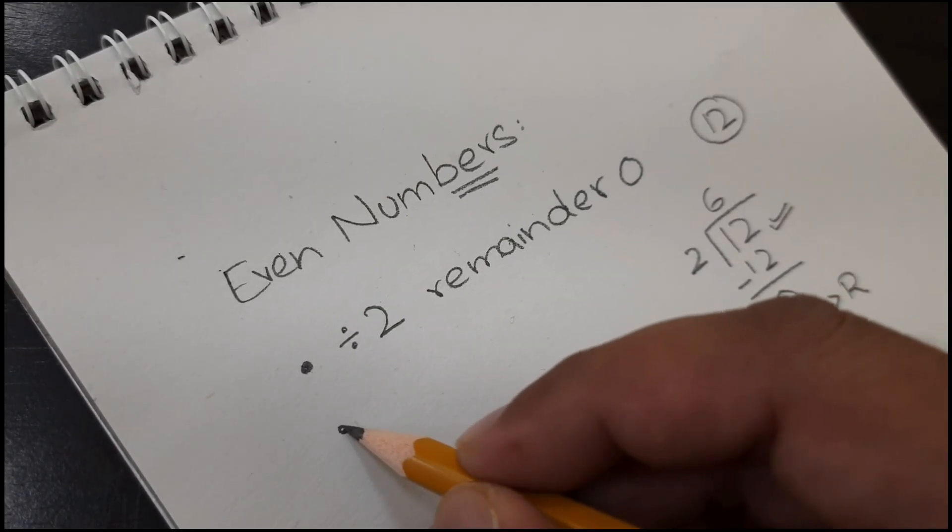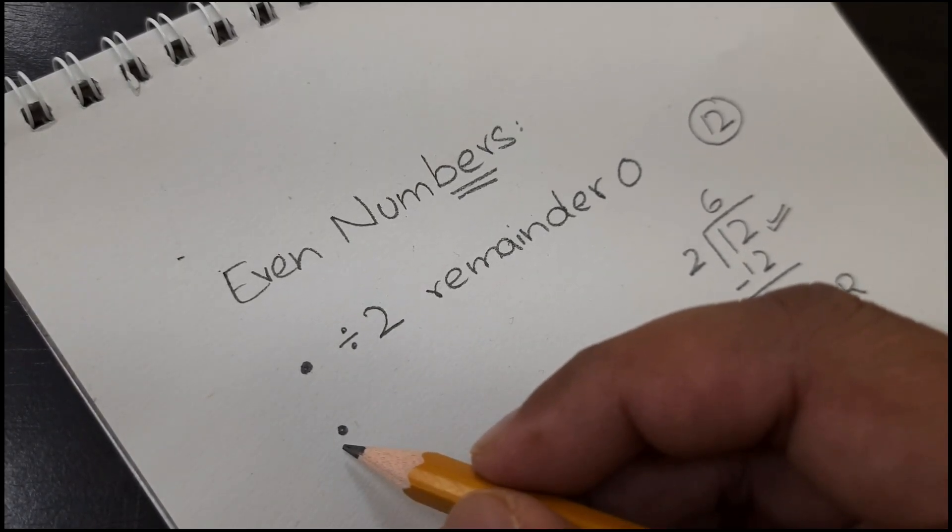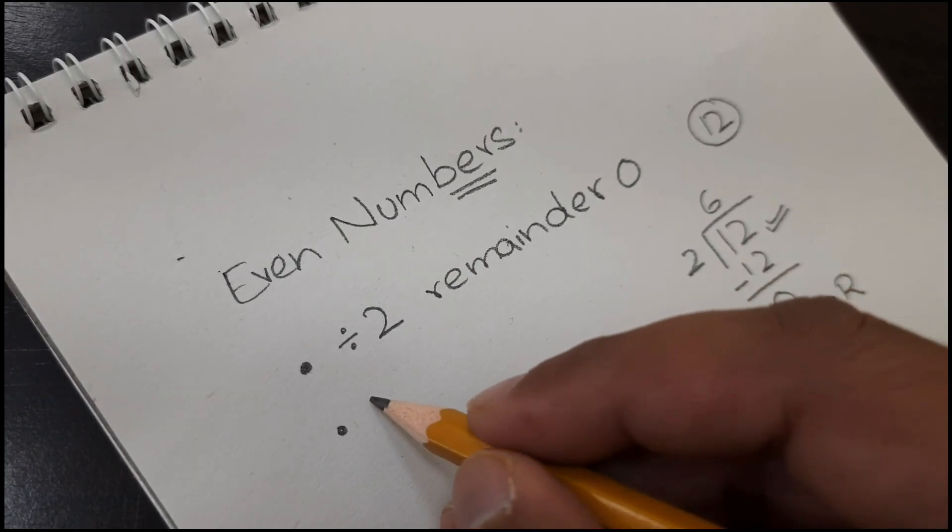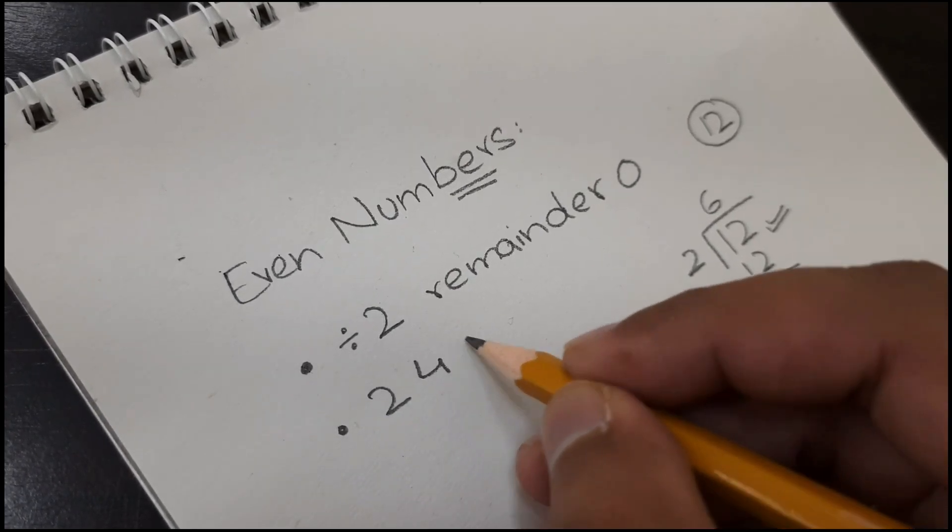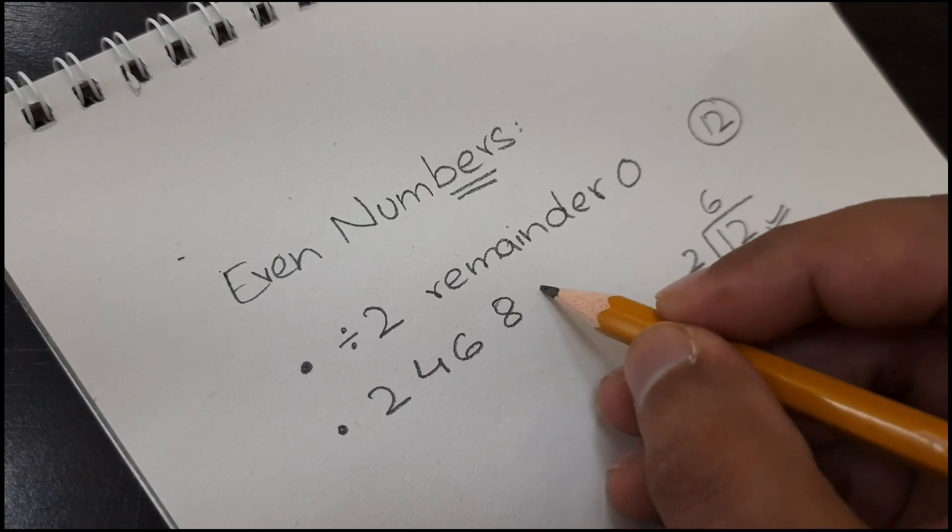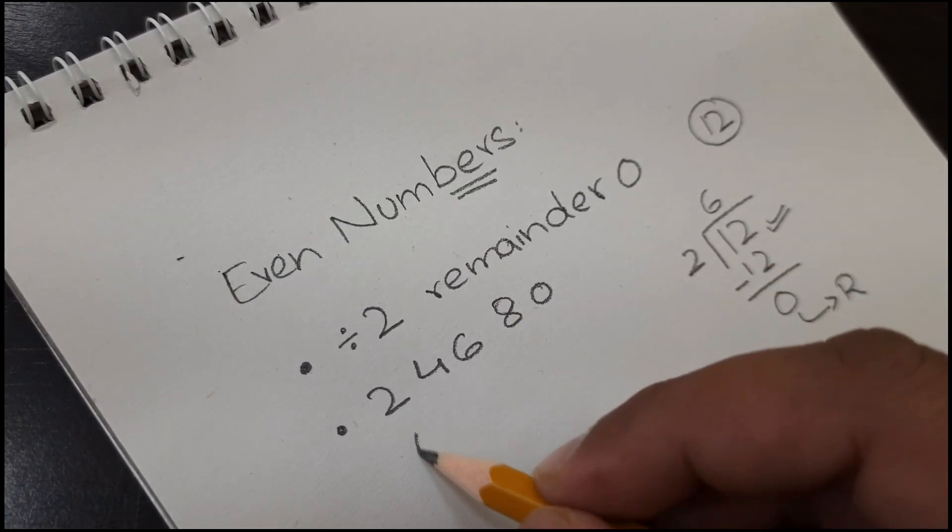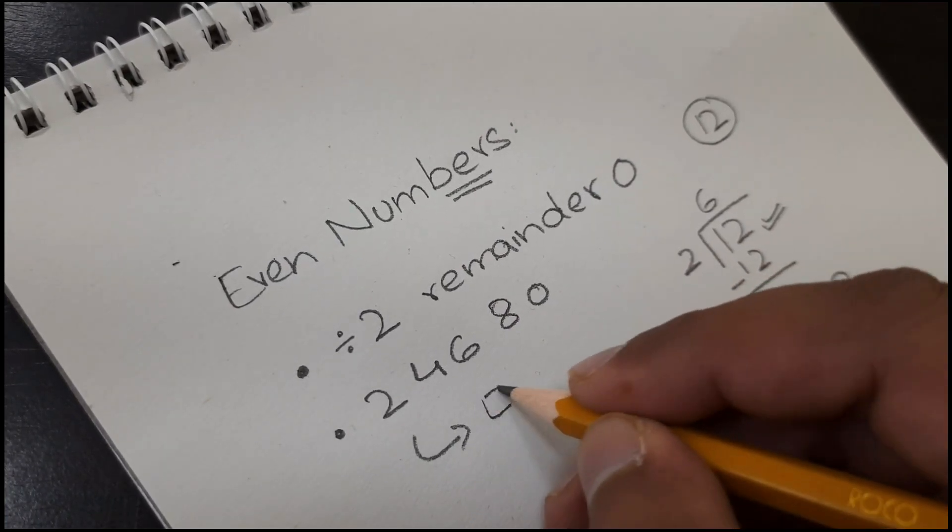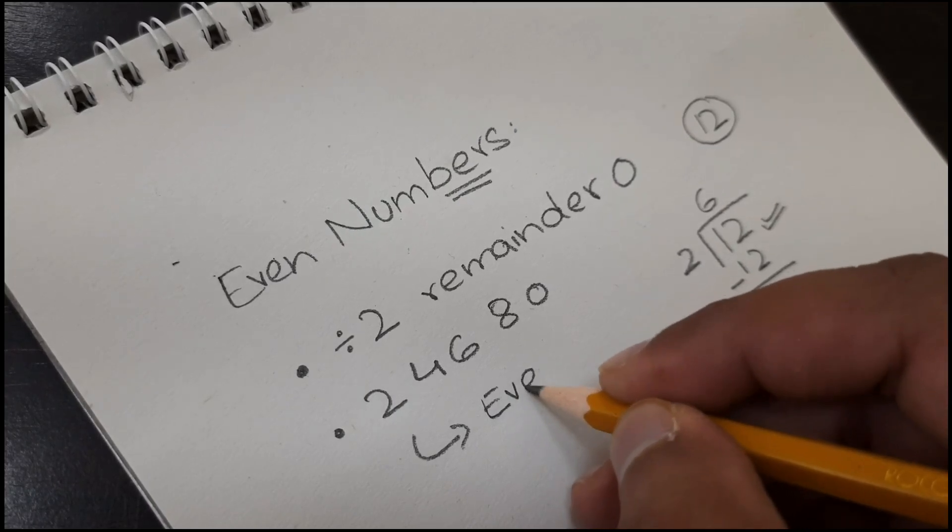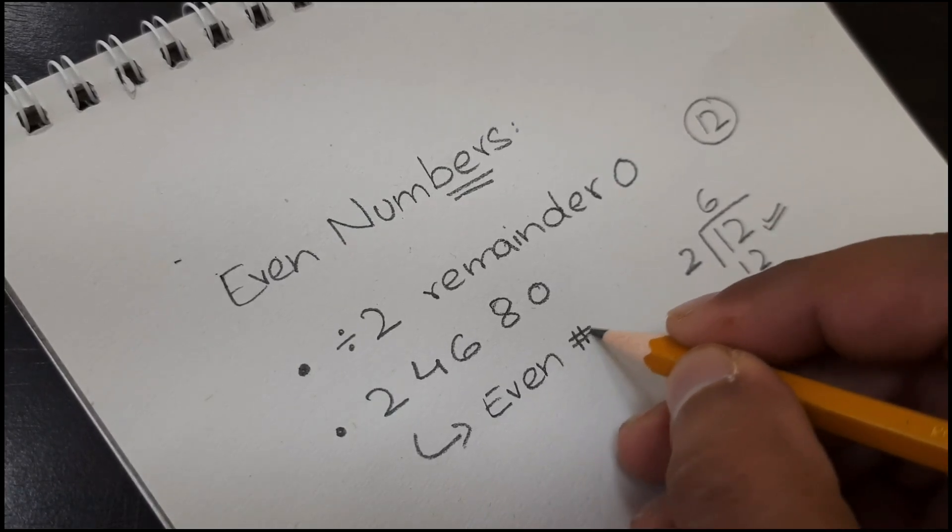The second point related to even numbers is that numbers ending with 2, 4, 6, 8, and 0 are all even numbers.